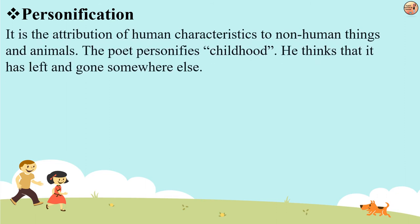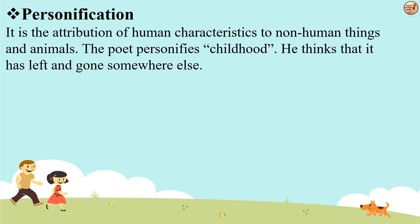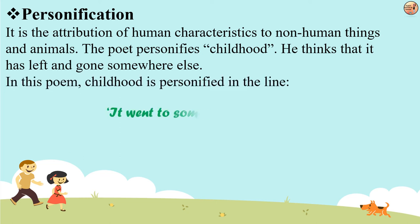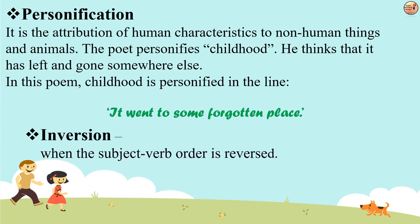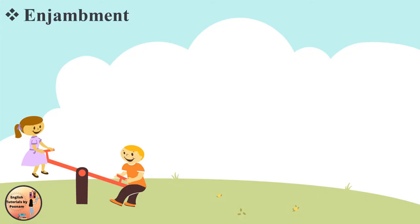Next we have personification — the attribution of human characteristics to non-human things and animals. In the poem, the poet personifies childhood, thinking it has left and gone somewhere else. Childhood is personified in the line 'It went to some forgotten place.' Next we have inversion — a term referring to the inverting of normal word order in a sentence. The poet reversed the subject-verb order in the line 'to use whichever way I choose' for a poetic effect.